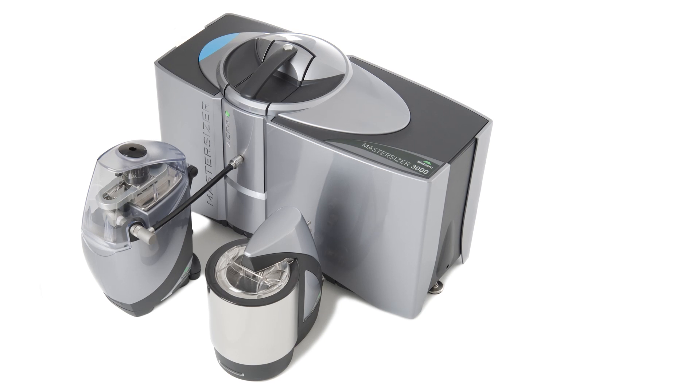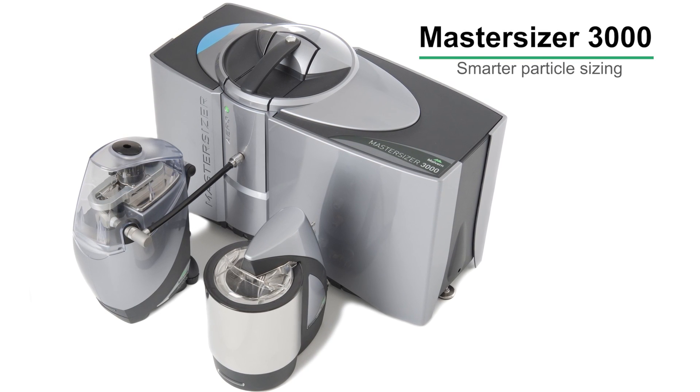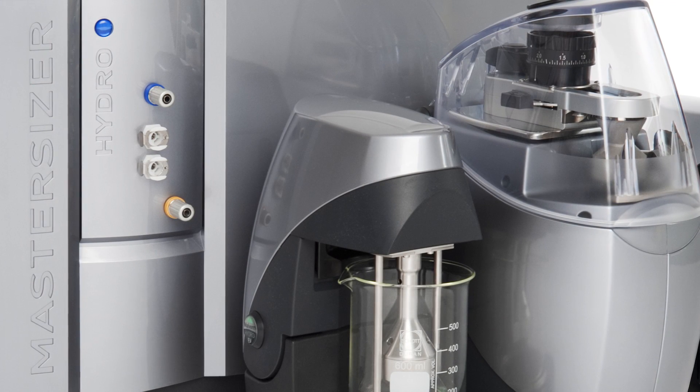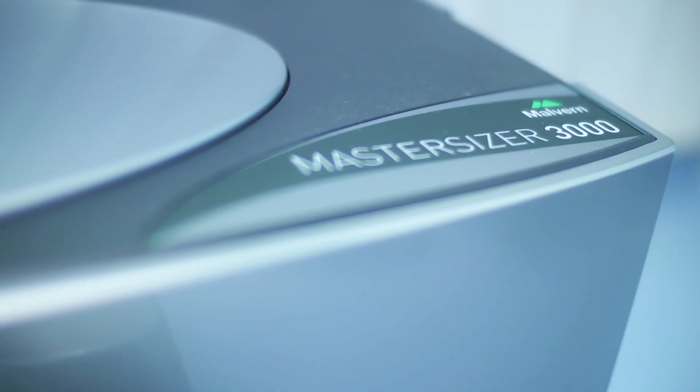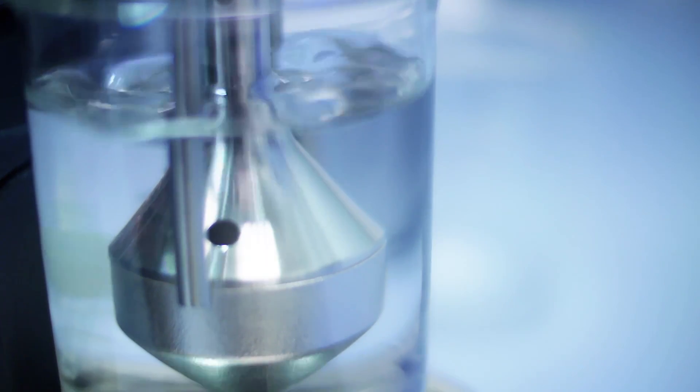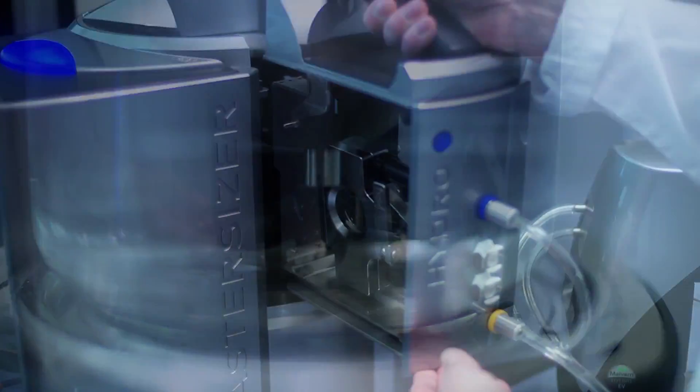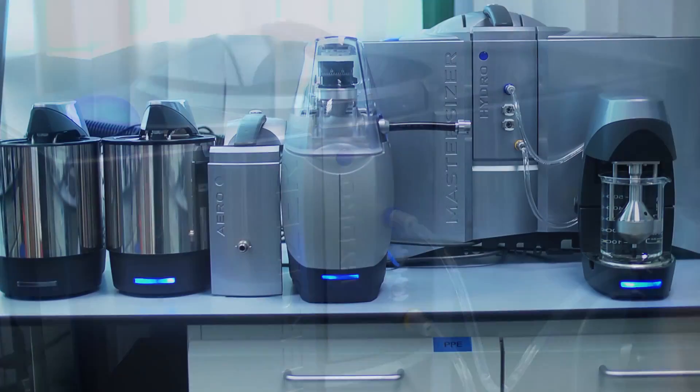The Master Sizer 3000 is the world's leading laser diffraction particle size analyzer. It has been developed not only to enable robust and rapid particle size measurements over a wide 0.01 to 3,500 micron range, but also to bring Malvern's application knowledge and expertise right next to you in the lab, enabling you to develop and run your methods efficiently.